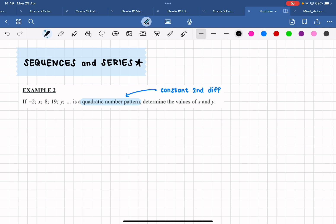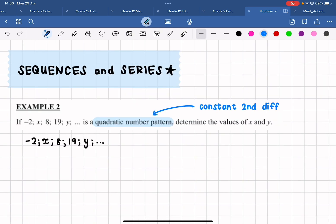Now this number pattern that they've given us, I'm just going to rewrite it underneath. We can see that they have not given us every single term or the value of every single term in this number pattern. They have actually expressed terms two and five in terms of variables, and they now want us to calculate the values of these variables.